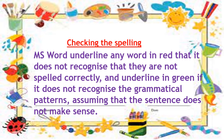MS Word underlines any word in red that it does not recognize or that is not spelled correctly, and underlines in green if it does not recognize the grammatical patterns, assuming that the sentence does not make sense. When our spelling is wrong, it shows the red color underlined.